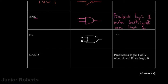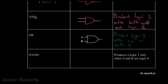The next gate is the OR gate. We're given the symbol, and the function is that it produces a logic one when one or both inputs are logic one. So if one input is at logic one, we get a one at the output; if both inputs are at logic one, we also get a one at the output.